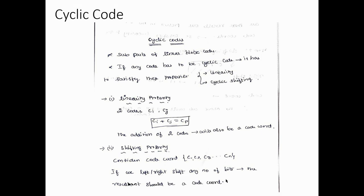Welcome to the digital communication lecture module. In this lecture we are going to discuss cyclic codes. Cyclic codes are sub-parts of the linear block code — they are a subdivision of the linear block code. For any code to be a cyclic code, it has to satisfy two properties: the linearity property and the cyclic shifting property.